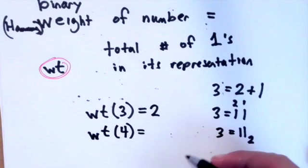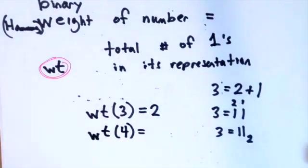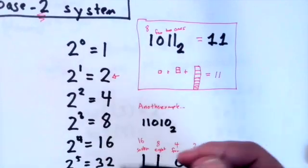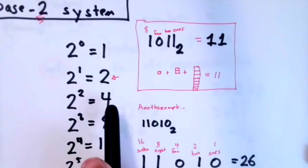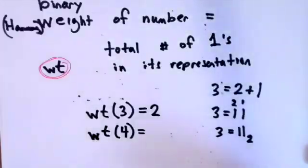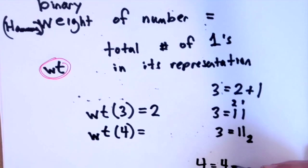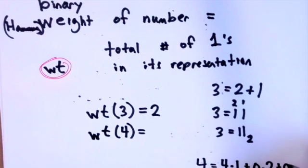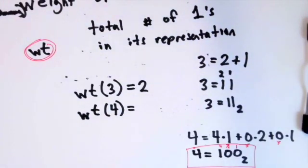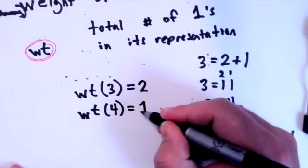What we have to figure out is what's the biggest power of two that we can get out of four? What's the biggest power of two we can get? Oh, we can actually get four, right? Because two squared is four. Because we can get four, we can just write four as four times one plus zero times two plus zero times one. The binary weight of four would be one.